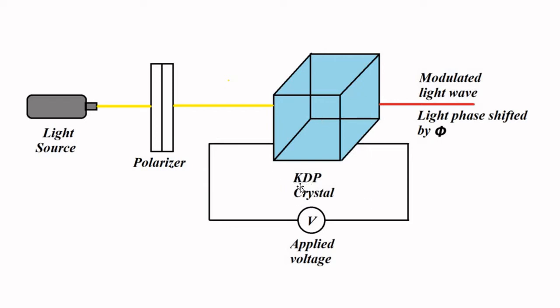Then we have the crystal material. Here we have used potassium dihydrogen phosphate crystal, KDP. Across it we have connected a voltage source which produces the resultant electric field depending on the length of the crystal material. Because of this there is a change in the refractive index of the crystal material, and because of that change in refractive index, the phenomenon of birefringence comes into play and produces a phase shift.